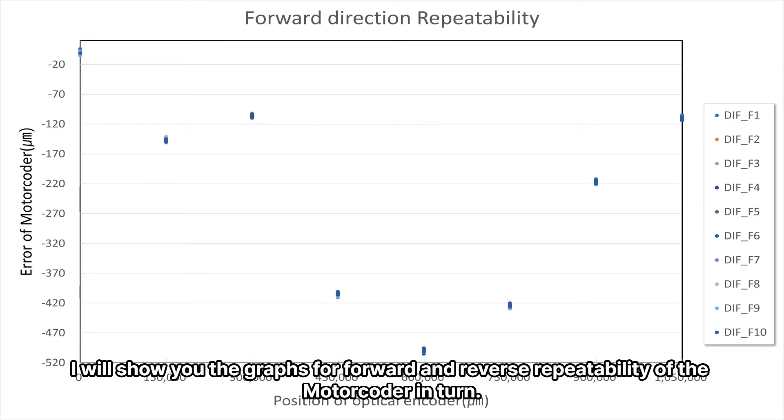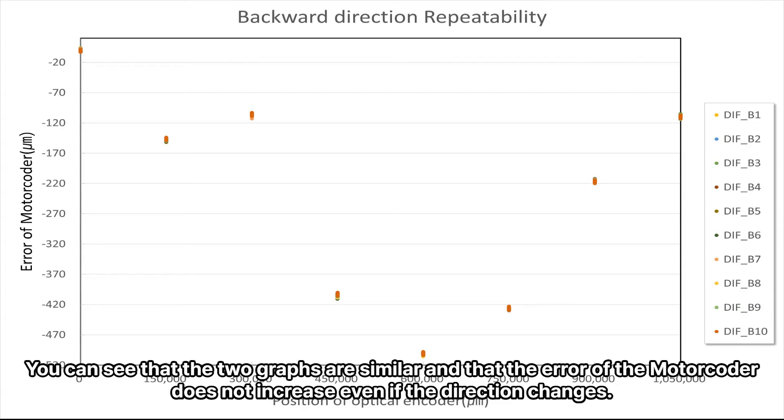I will show you the graphs for forward and reverse repeatability of the motor coder in turn. You can see that the two graphs are similar and that the error of the motor coder does not increase even if the direction changes.